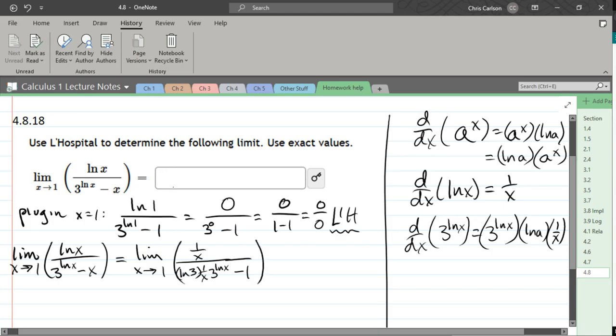Now if we plug in 1 here, let's see what we get. So 1 over 1, which is 1. So already I can tell L'Hopital's rule will not apply. We have ln 3 times 1 over 1 times 3 to the ln of 1 minus 1.